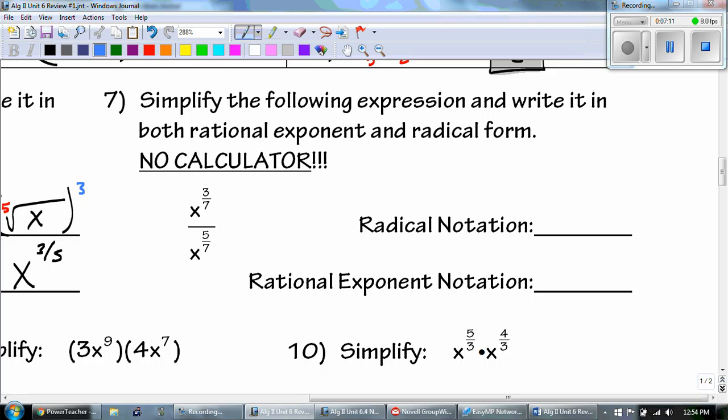For number 7, we would do the same thing. Look to see which one wins and the bottom wins. 5 minus 3 is 2. So my rational exponent, that's pretty much already it. And then rewriting that, I would just rewrite it underneath. So there's my x. 7 is my root. And the 2 is our exponent.